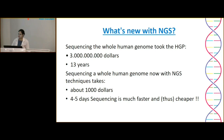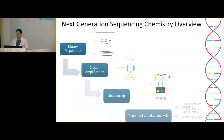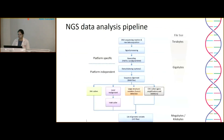In principle, NGS is similar to most sequencing chemistries — sequencing by synthesis — except millions of fragments are sequenced in parallel. The Illumina-based NGS workflow involves multiple steps: library preparation, cluster amplification, sequencing, alignment, and data analysis. I would like to emphasize the data analysis aspect.